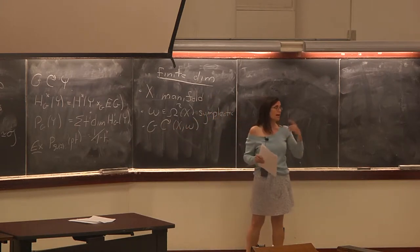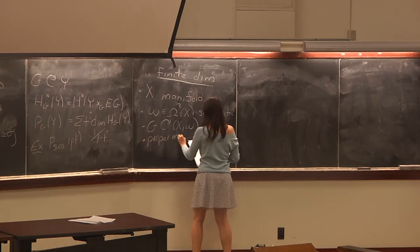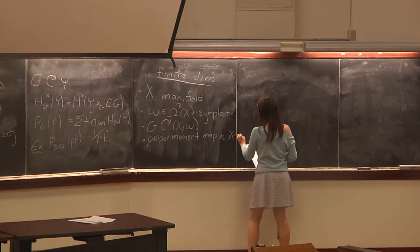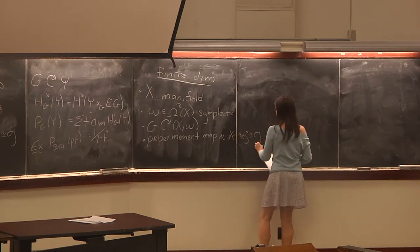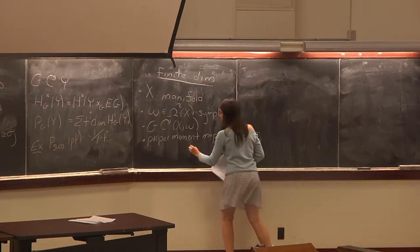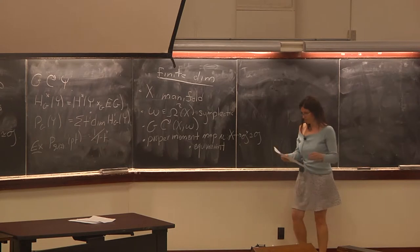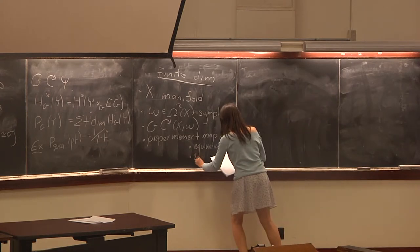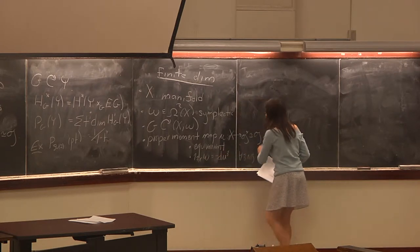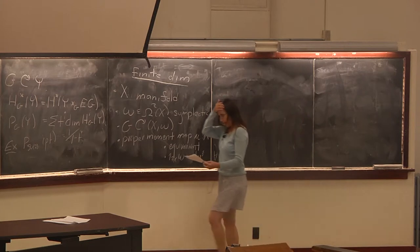We want to assume that there is a proper moment map mu from X to G*. But remember, I'm identifying that with G, so this is just the adjoint action. I want this map to be equivariant with respect to the adjoint action. And I want ι_{X_ξ} ω = −d⟨μ, ξ⟩ for all ξ in the Lie algebra. I'm going through it again because I'm going to have to change it for the infinite dimensions.